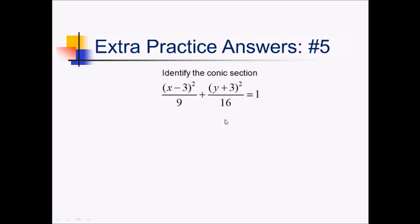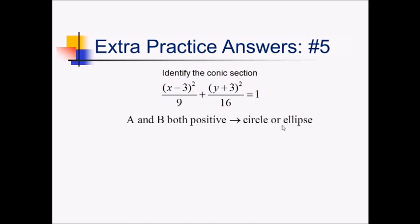On this problem, I notice I've got two squared terms, so it's not a parabola. And I notice that x squared and y squared both have the same sign — A and B are both positive — so that means this is either a circle or an ellipse. Now if I were to actually expand all this out and divide by 9 and 16, I'd see that the coefficients of x squared and y squared are different. A does not equal B, so that means we must be dealing with an ellipse.